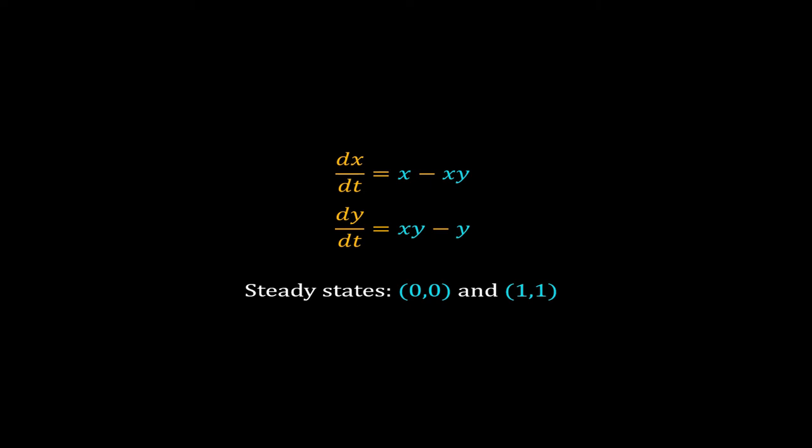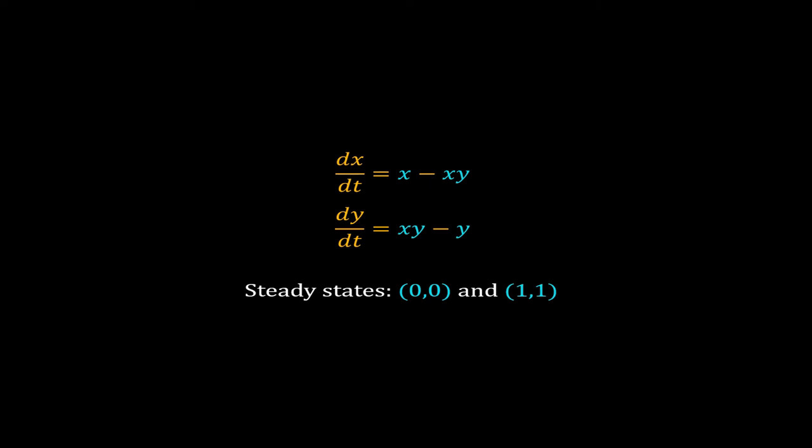First, calculate the Jacobian. The Jacobian is calculated by taking the partial derivatives. Be careful about the arrangement of these partial derivatives in this matrix.